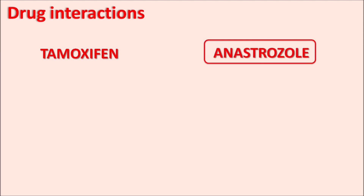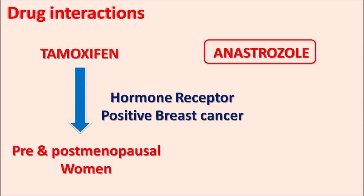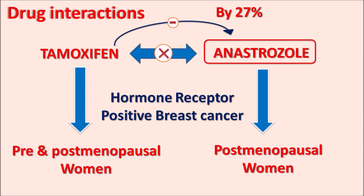One important drug interaction is observed between tamoxifen and anastrozole. Both drugs are indicated in hormone receptor positive breast cancer. A key difference is that tamoxifen can be used in both pre- and postmenopausal women, whereas anastrozole is effective only in postmenopausal women. Tamoxifen can inhibit the levels of anastrozole — when this combination is given, a 27% reduction in anastrozole levels can be observed, reducing the efficacy of anastrozole. Pharmacologically this combination is not beneficial, so tamoxifen is never combined with anastrozole.